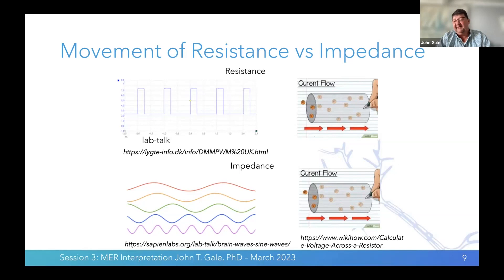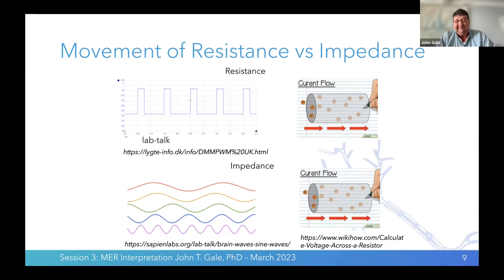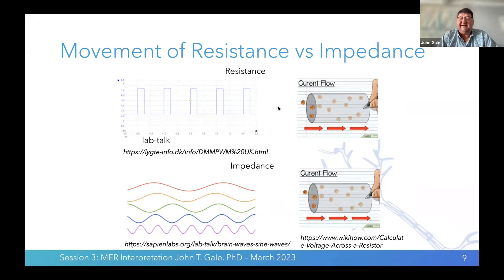Impedance is a little different because it also takes into account frequency. Our macro contacts have a different impedance than the micro contacts. If you break it down by different frequencies, certain frequencies will flow faster through a low impedance than others. Our microelectrodes are very high impedance, which limits the types of frequencies that can flow through them so we can more isolate neurons. Essentially, resistance is the resistance to the flow of ions, where impedance also looks at the frequencies of the flow of electrical properties.